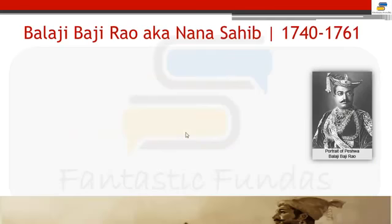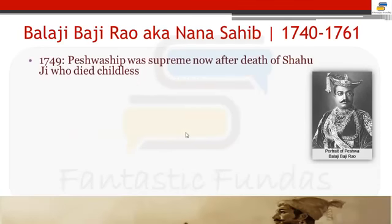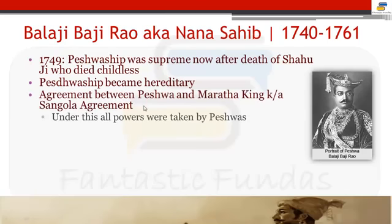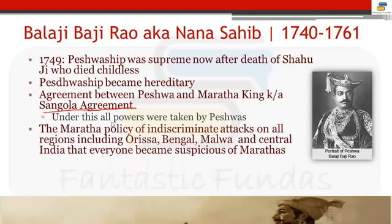The third Peshwa is Balaji Bajirao, also known as Nana Sahib. Peshwaship became supreme because Shahuji died childless in 1749 — a very important year. There was now an agreement between the Peshwa and the Maratha king known as the Sangola Agreement. Many questions have been asked on this. Under this agreement, all power obviously went to the Peshwa, who was stronger.